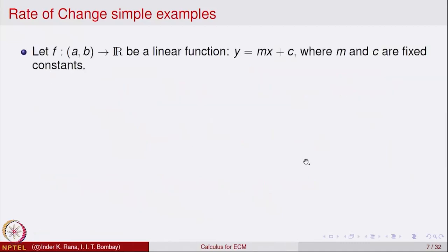Let us look at another simple example: the linear function y equal to mx plus c, where m and c are fixed constants. Recall that m is the slope of the line and c is the y-intercept. To find the proportionate change, for a point x₀ in (a, b), we look at f of x₀ plus h minus f of x₀ divided by h — the increment in the values of the function divided by the increment in the independent variable x at the point x₀.